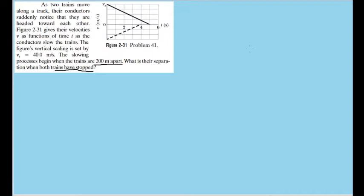Now understanding what we know about displacement and velocity and how they relate with each other, we know that the displacement of a particle or object as it's traveling is the same thing as the integral of its velocity. Now since we have a graph of the velocity here, we can find the displacement of each train as the area underneath both curves.